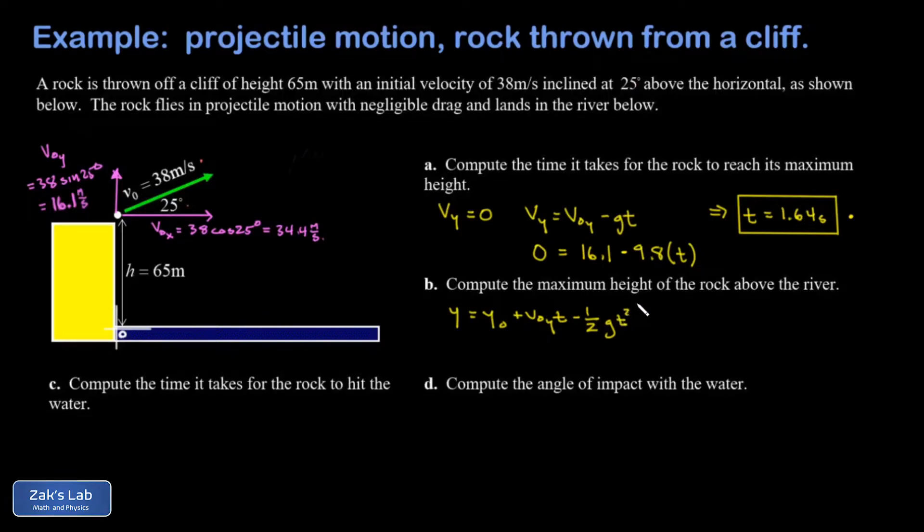Subbing in an aᵧ acceleration of negative g and we put our time t into that and we'll get the height when t is 1.64 seconds. So my initial height relative to the river, that was 65 meters. The initial y velocity, 16.1 meters per second. The time of flight before I get to the maximum height, 1.64 seconds.